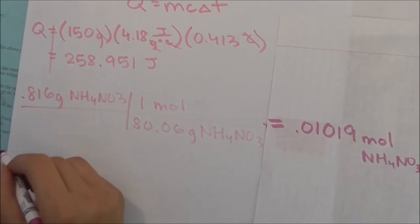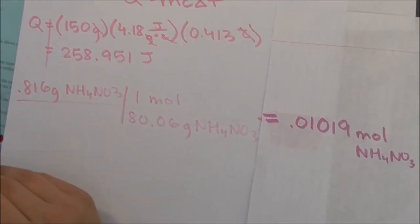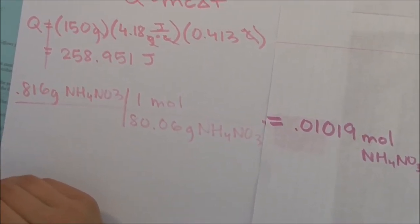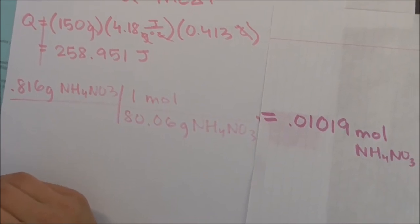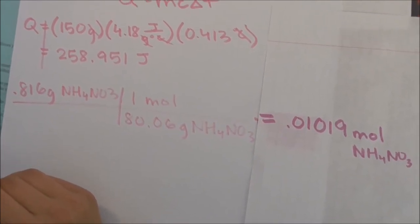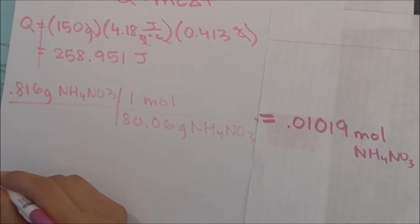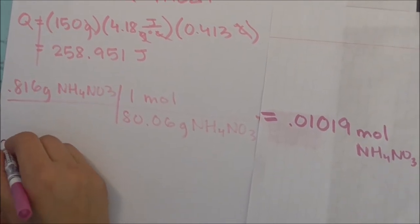Now, as the problem states in the multiple choice, all the answers are in kilojoules per mole. But the answer we have for Q is in joules. So, we divide the answer of joules by moles first.